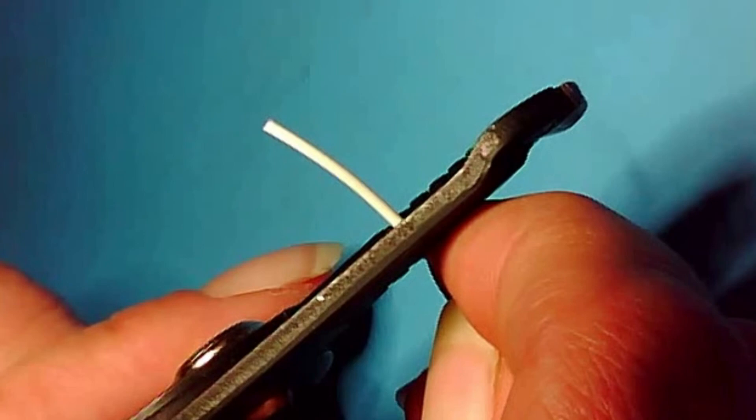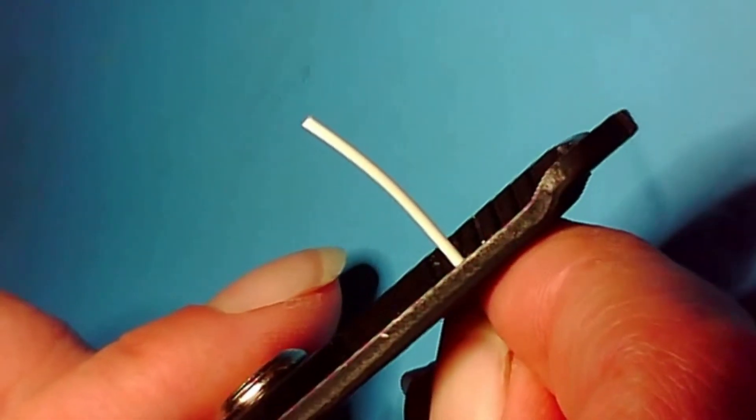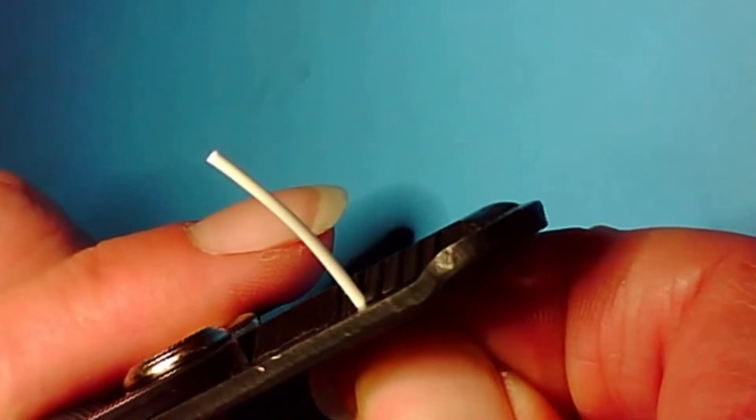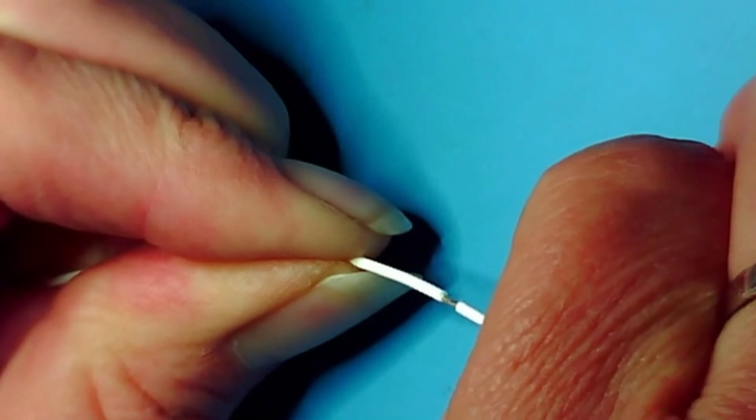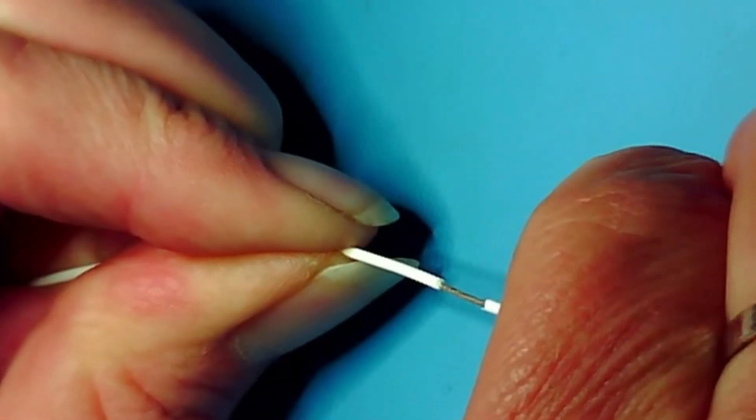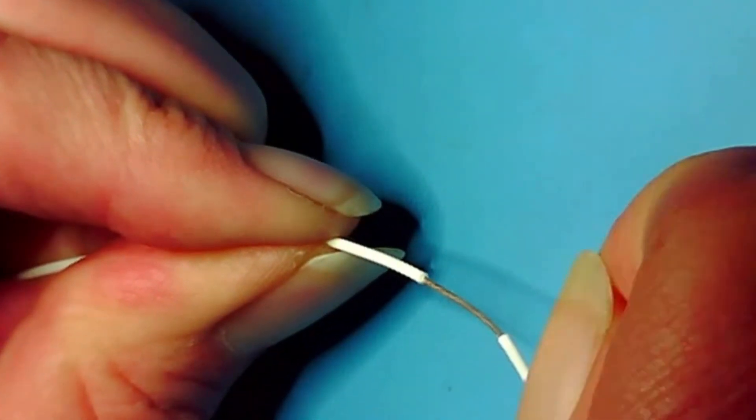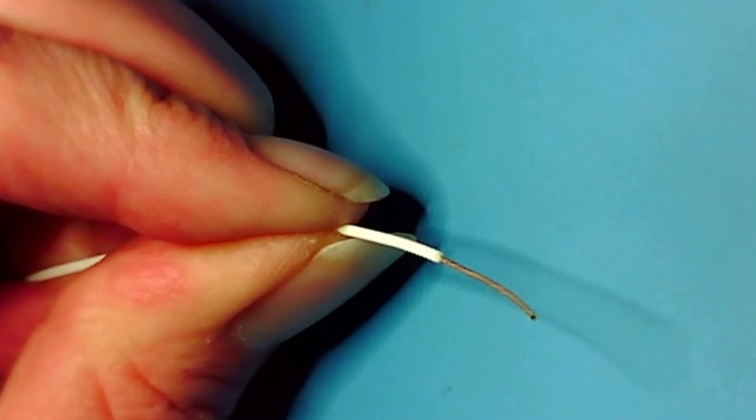Squeeze the blades closed and gently rotate the pliers around the wire to ensure that the insulation is cut all the way around. Release the wire from the jaws and remove the insulation by hand. When removing the insulation, gently twist the insulation slug to maintain the twist of the underlying wire. If the twist is not maintained, the wire will be straightened and will require re-twisting after the insulation is removed.